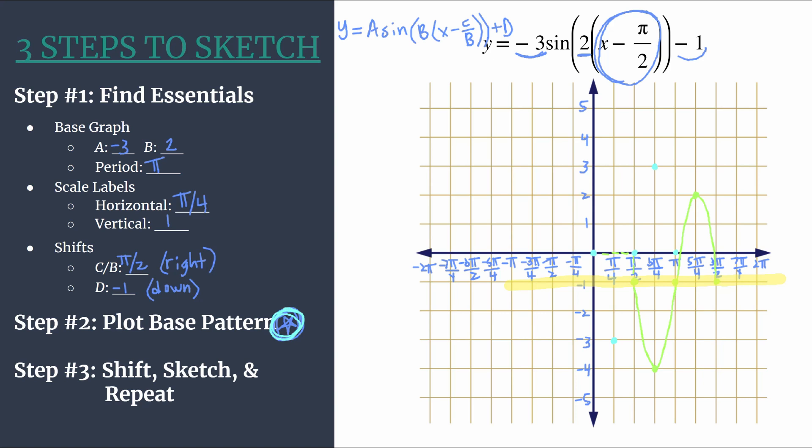So you can even highlight that if you want, or do something to help yourself see that, or maybe just do a double check at the end. And I am switching to purple to show the additional cycles of sine. So from this midline point, we're going to have a minimum next, and then another midline point. And that's really all we have room for on this side.